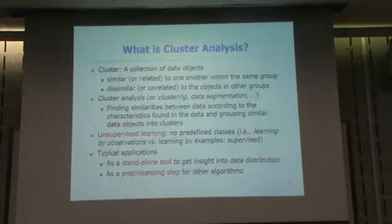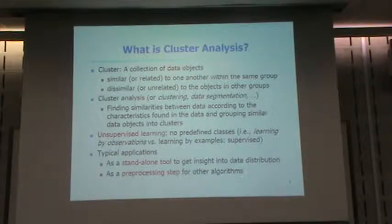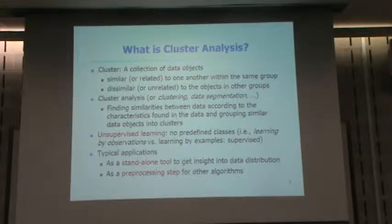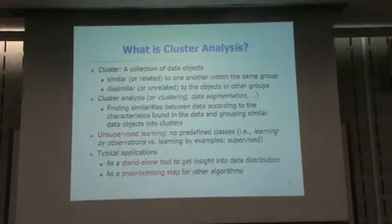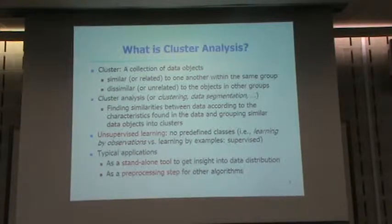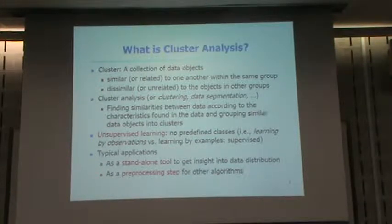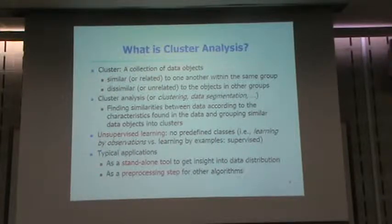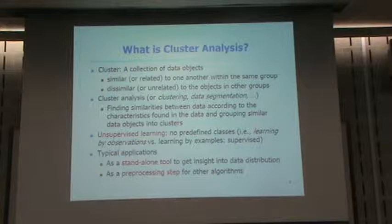Clustering is unsupervised learning. Why is it called unsupervised? For the data, we do not have a label — whether this belongs here or there, this is good or bad, this is rain or snow. We do not have such labeled data. We need to decide the group ourselves. The idea is: if data are similar, they belong to the same group. If two or several data items are different, they will belong to different groups. That makes sense. If data are similar, they belong to the same group; if dissimilar or unrelated, the data will be in a different group.